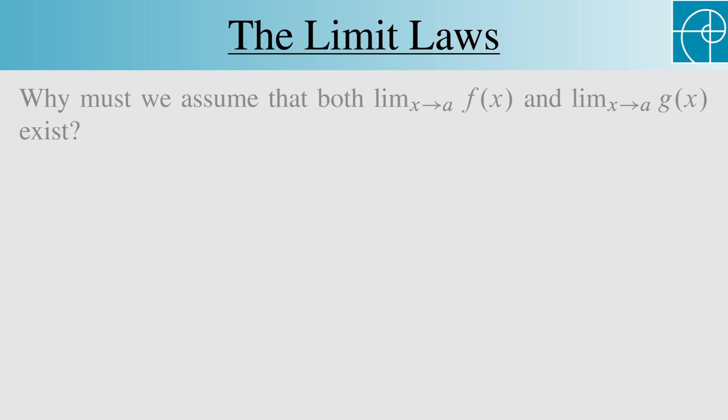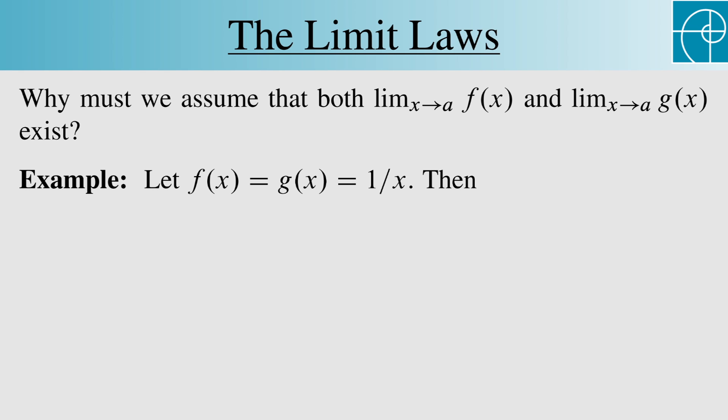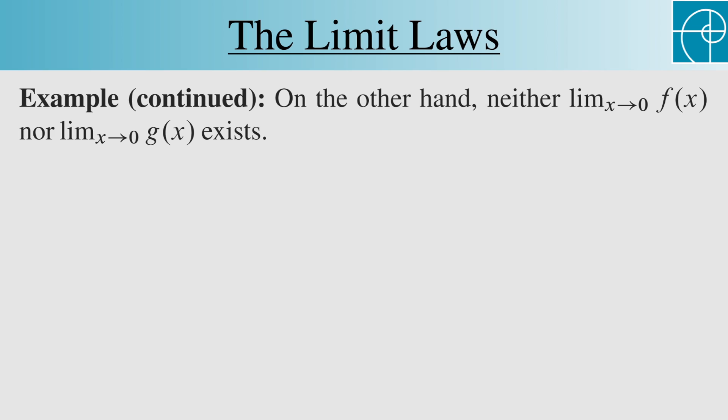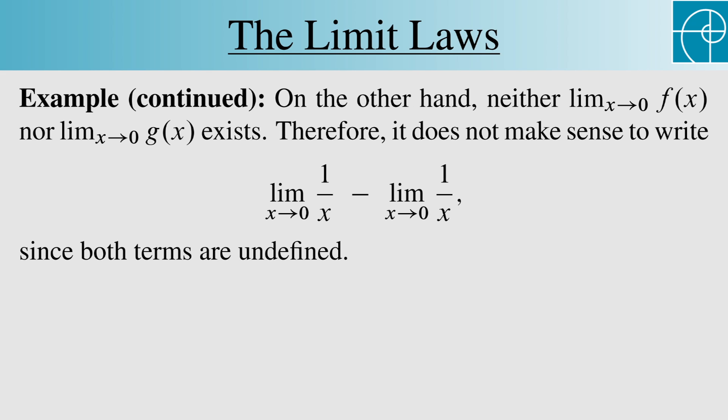You might be wondering why we need to assume that the limits of f and g exist. Let's look at an example that shows us why. If f and g are both 1 over x, then the limit of f minus g at 0 is the limit of 1 over x minus 1 over x, which is always 0 as long as x isn't 0. So the limit of f minus g is 0 everywhere. But neither the limit of f nor the limit of g exists at 0, so it doesn't make any sense to write this, since both terms are undefined.